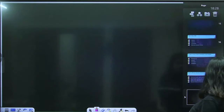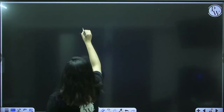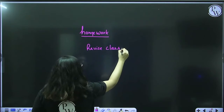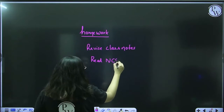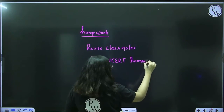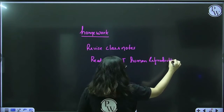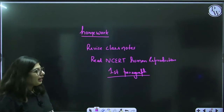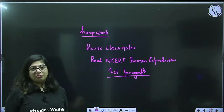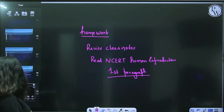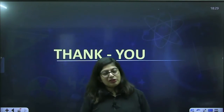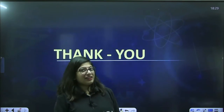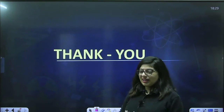For homework, you have to revise your class notes and read the first paragraph of NCERT chapter Human Reproduction — that's it, a very small amount of homework. In the next class, I will ask you a question and we will start with the male reproductive system. This class was small because it was just the introduction, but we covered it in good detail.